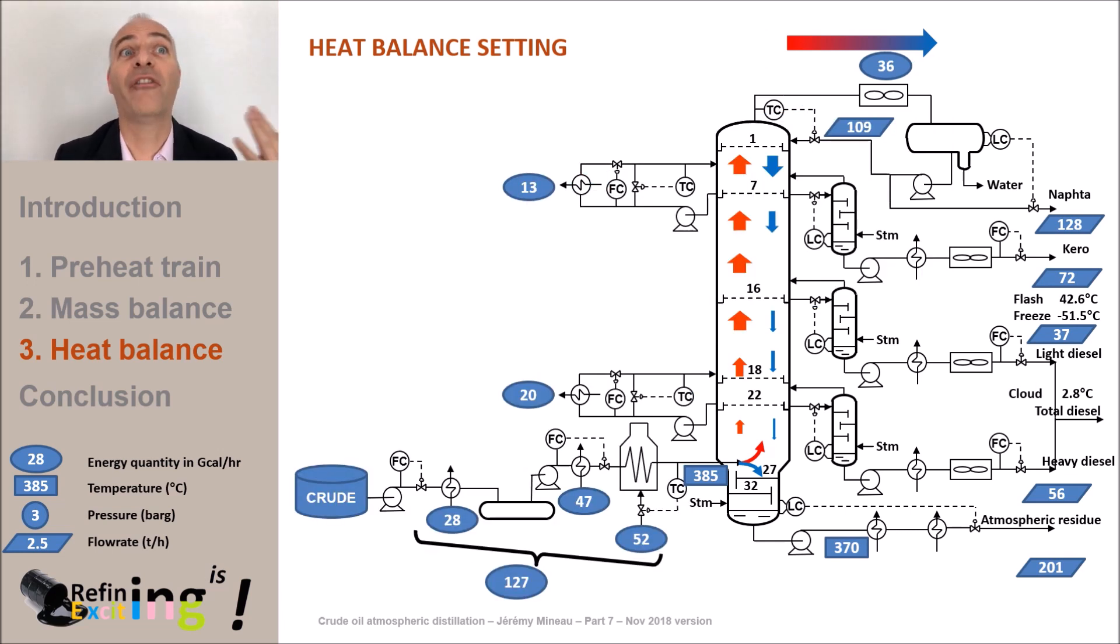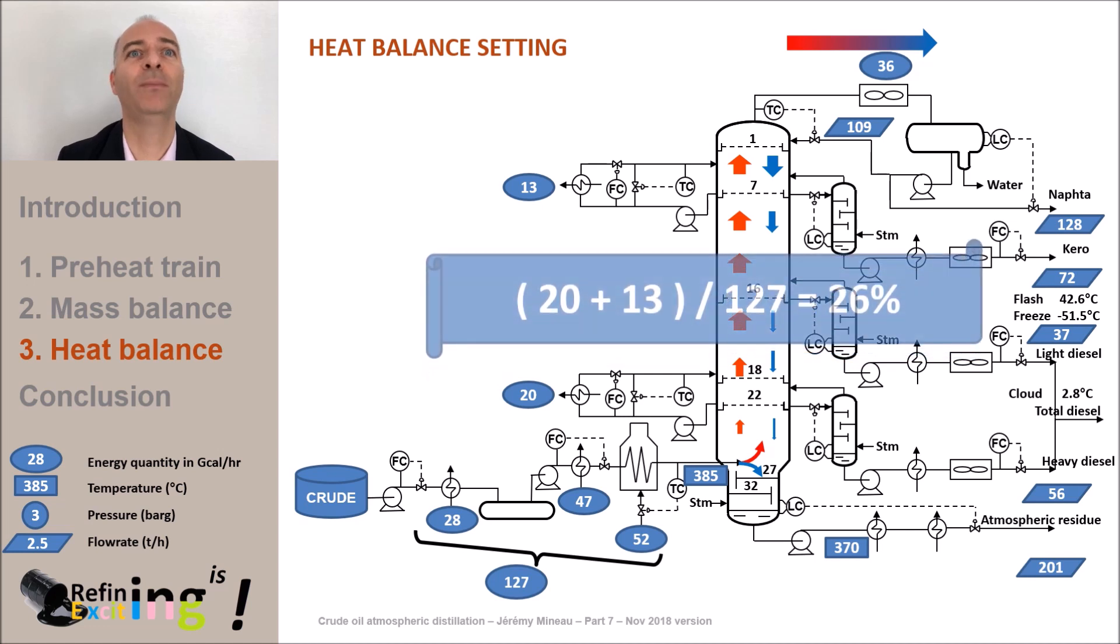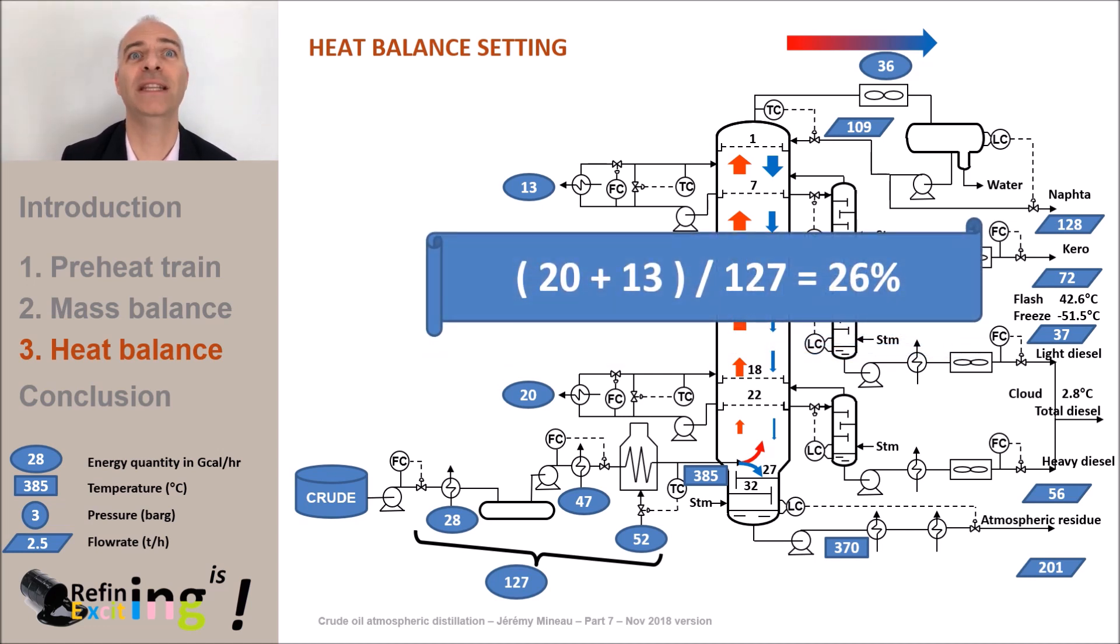And we have now our final material balance, heat balance and product qualities. We can see that both pump arounds allowed to extract 20 plus 13 gigacalories per hour. It means 33 gigacalories per hour which is significant when we put this value in balance with the duties necessary to heat the crude. These pump arounds led to lower the condenser duty by 32 gigacalories per hour. Almost exactly the amount of energy recovered in the pump arounds.